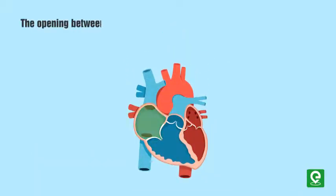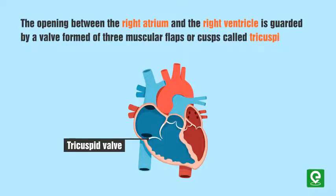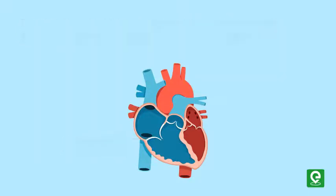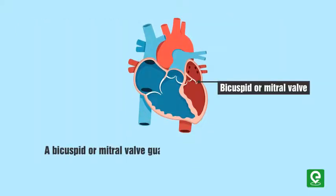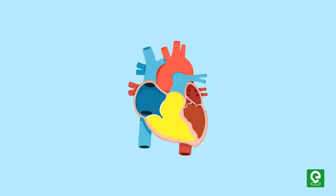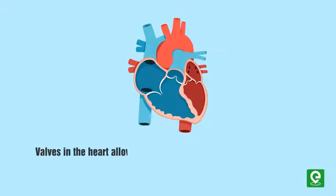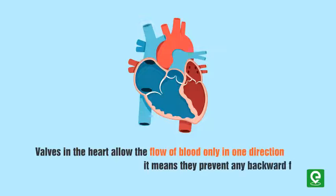The opening between the right atrium and the right ventricle is guarded by a valve formed of three muscular flaps or cusps called the tricuspid valve. A bicuspid or mitral valve guards the opening between the left atrium and the left ventricle. The openings of the right and left ventricles into the pulmonary artery and the aorta respectively are provided with semilunar valves. The valves in the heart allow the flow of blood only in one direction, preventing any backward flow.